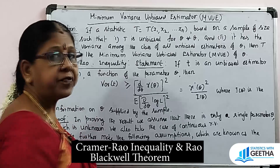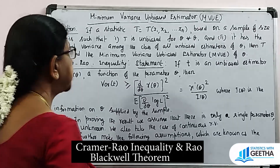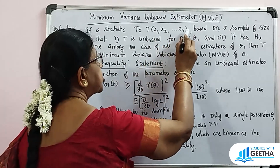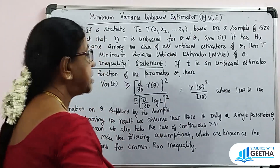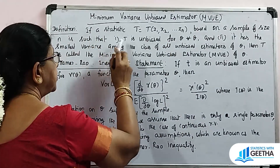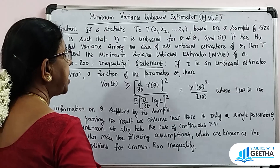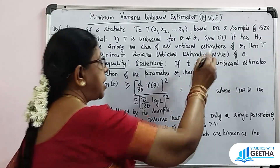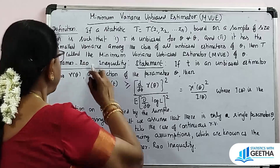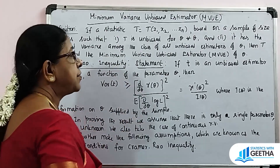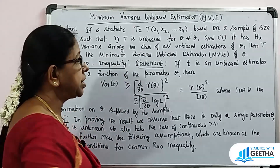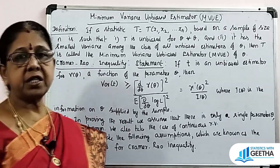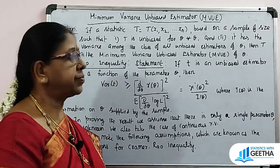The definition of Minimum Variance Unbiased Estimate: if a statistic t, which is equal to t of x1, x2, ..., xn, based on a sample size n, is such that — first condition — t is unbiased for theta for all theta, and second, it has the smallest variance among the class of all unbiased estimators of theta, then t is called the Minimum Variance Unbiased Estimator of theta.